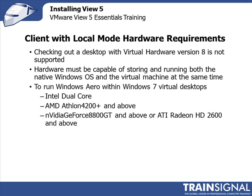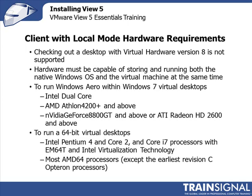To run Windows Aero or Windows 7 virtual desktops in local mode, you need at least an Intel dual core processor or an AMD Athlon 4200 or above, and a GPU of NVIDIA GeForce 8800GT or ATI Radeon HD 2600 or higher. For 64-bit virtual desktops in local mode, you need an Intel Pentium 4, Core 2, or Core i7 processor with Intel VT instructions, or most AMD 64 processors except the earliest Revision-C Opteron processors.